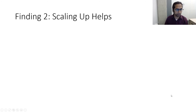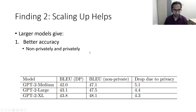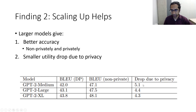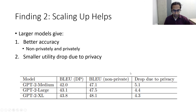The second finding, which is surprising, is that scaling up helps. Larger models give better accuracy both non-privately and privately. Here we look at GPT-2 medium, large, and XL computing BLEU score in both settings, and we find that just as larger models give better accuracy non-privately, the same holds privately. Additionally, larger models show a smaller utility drop due to privacy — the gap between non-private and DP tuning shrinks from 5.1 percent to 4.3 percent as models scale up. This was counter to my intuition, since in smaller settings larger models often result in worse private accuracy.